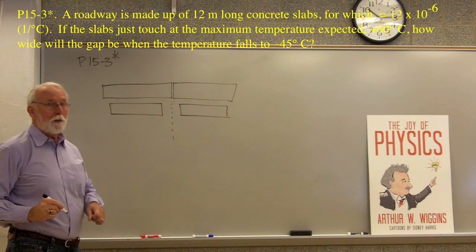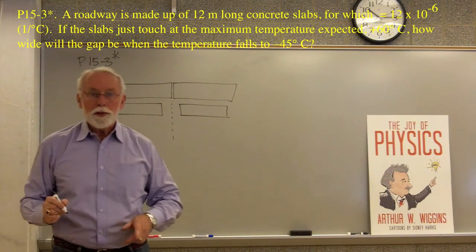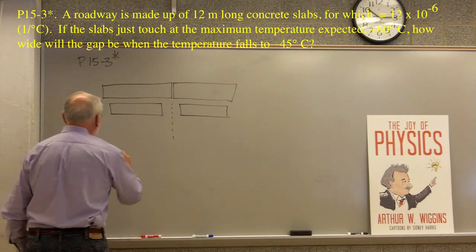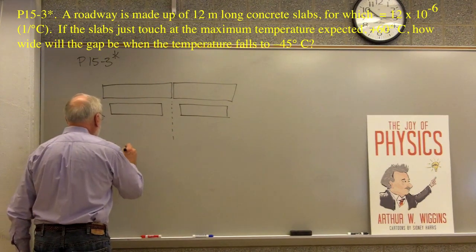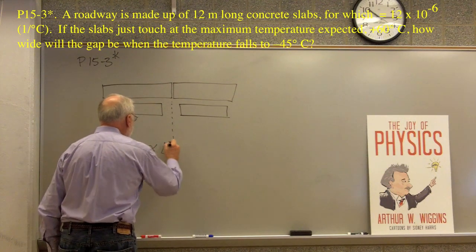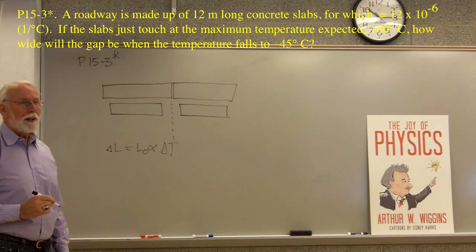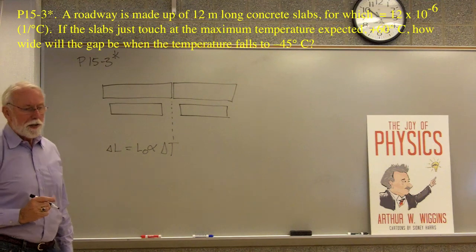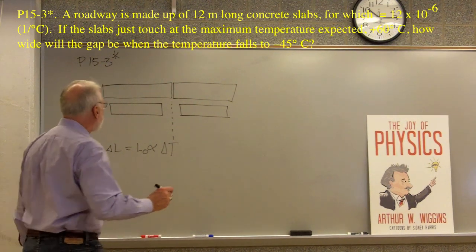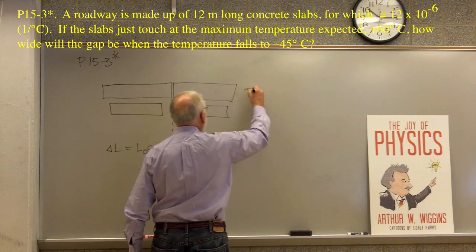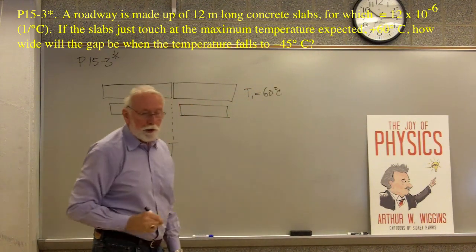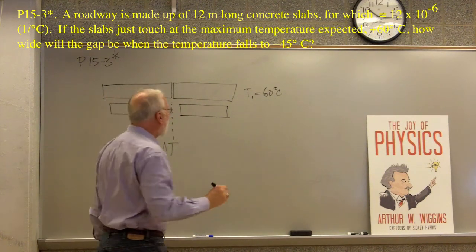So then what do we have in the way of a physics relationship that deals with this? We have one that says delta L equals the original length times alpha delta T. So then in the first condition, the temperature is 60 degrees C. Temperature one is 60 degrees C. And it says the temperature at two is minus 45 C.